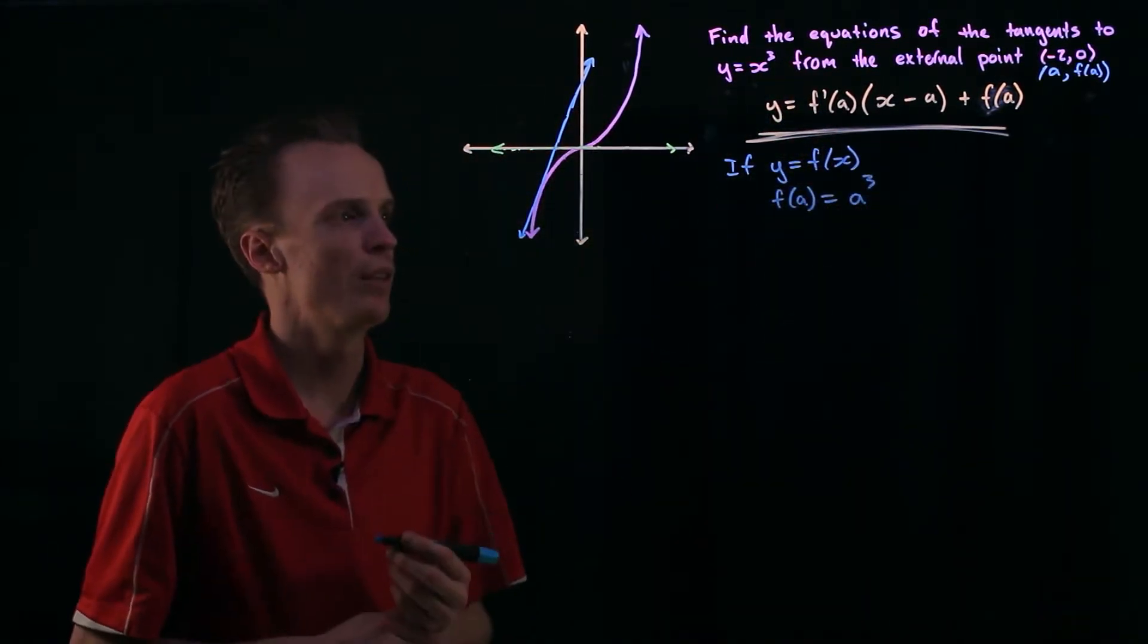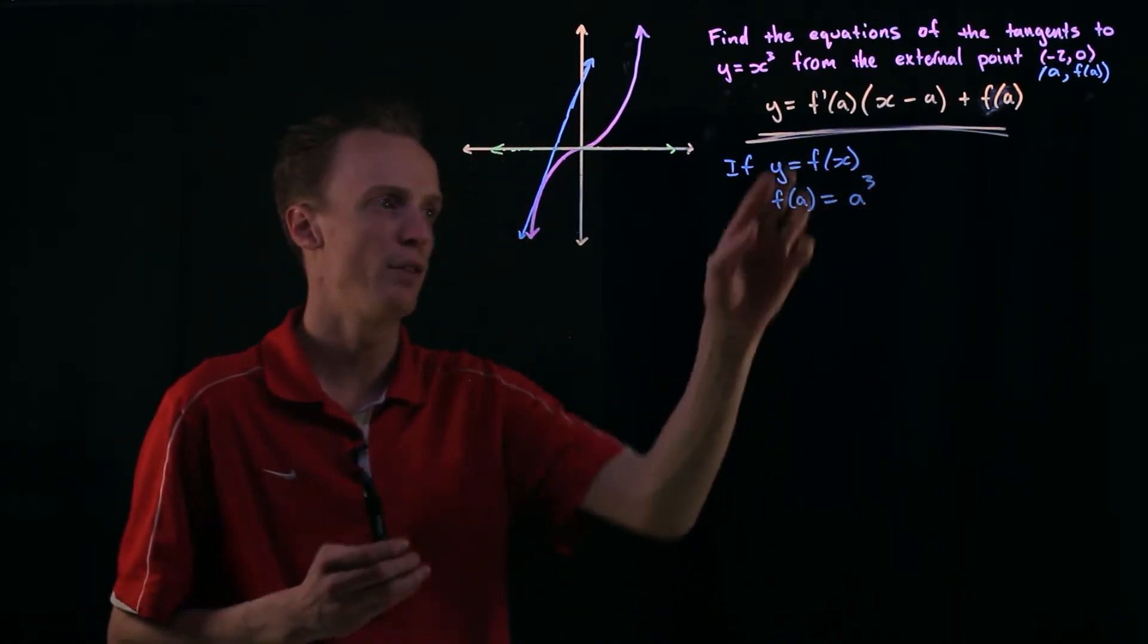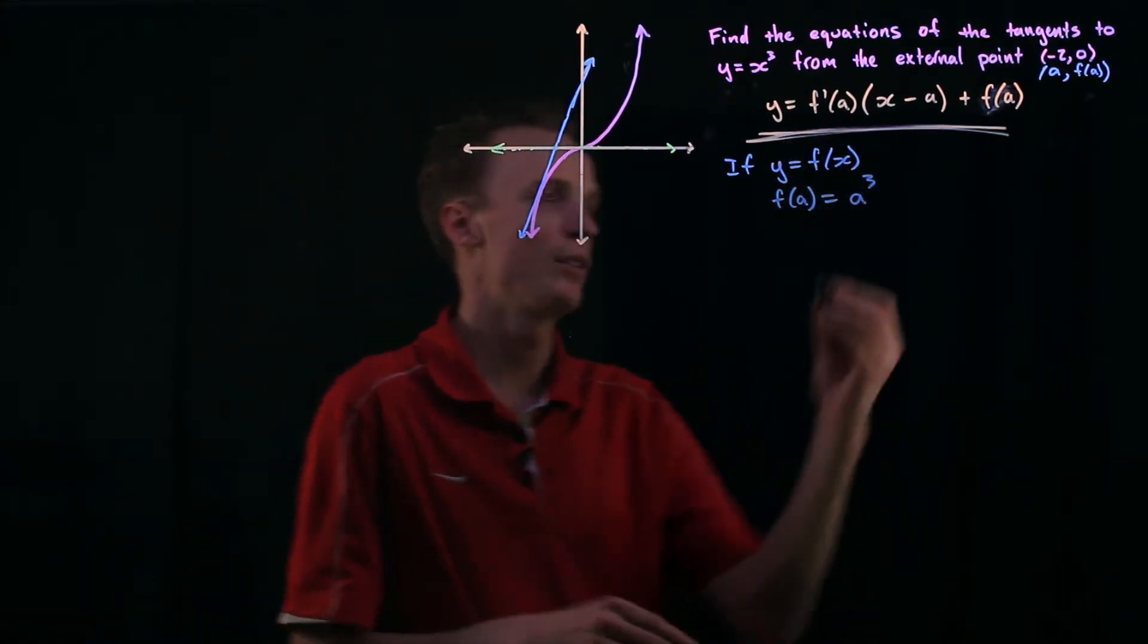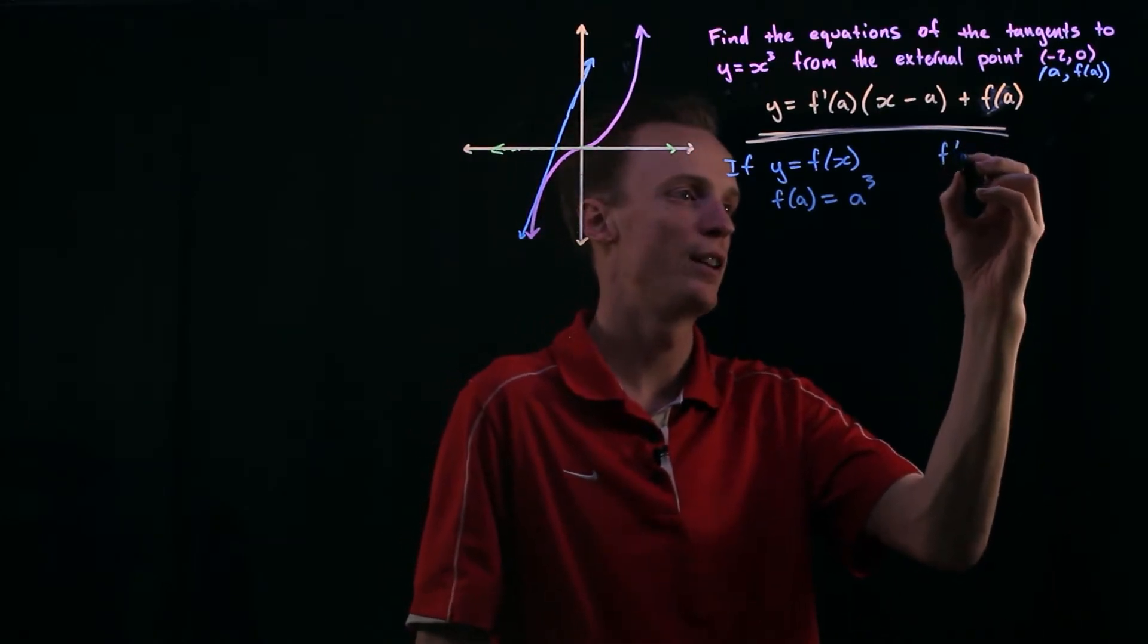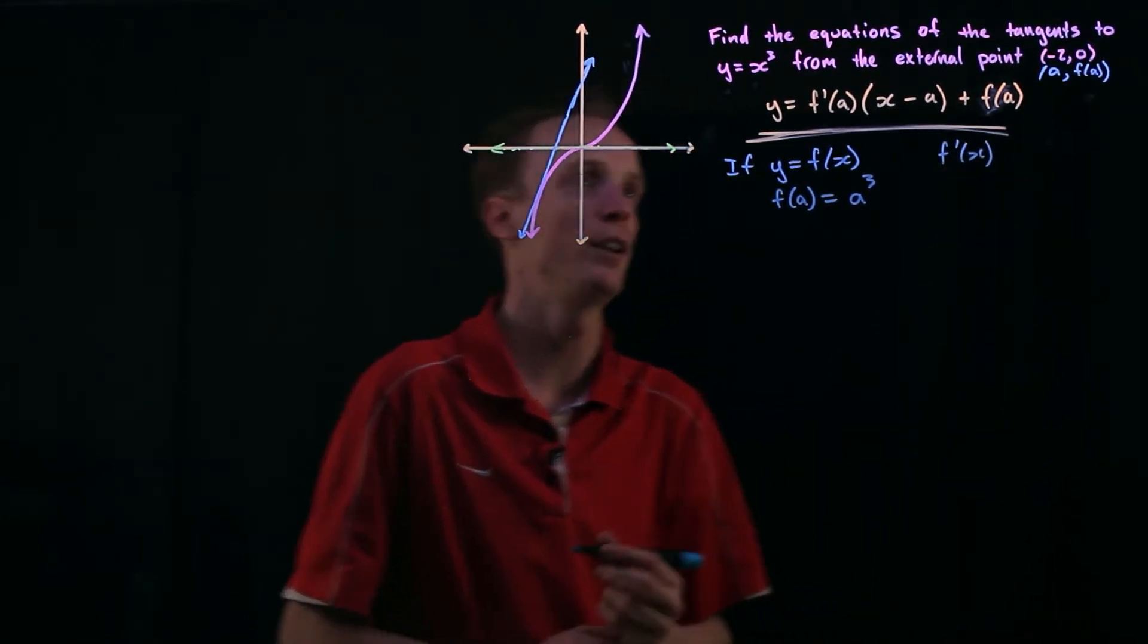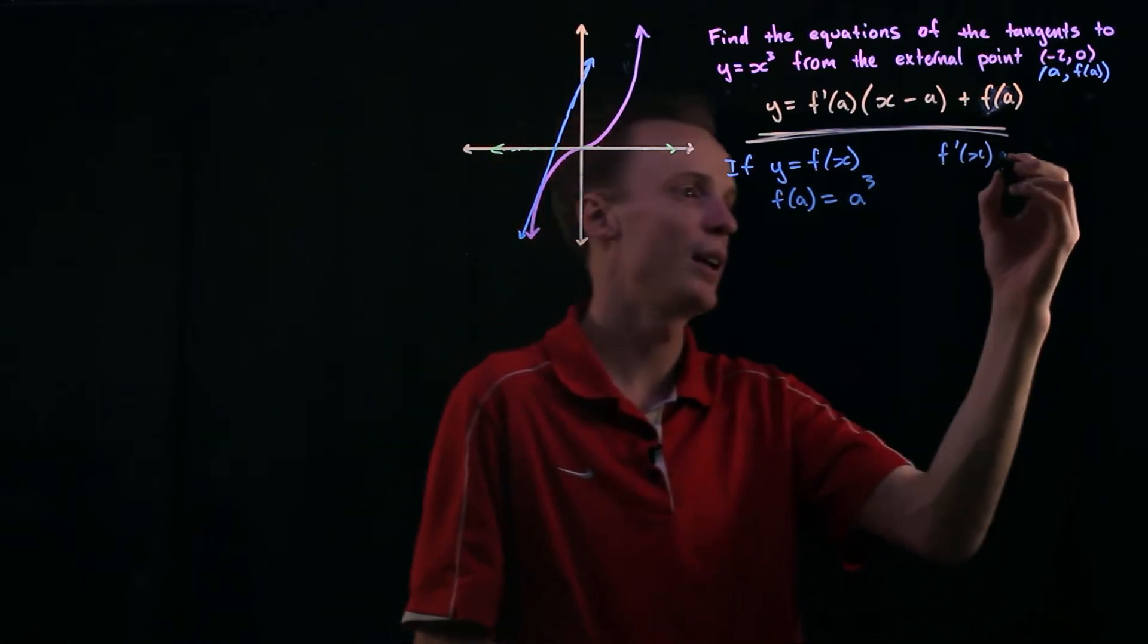What I also need though is I need to find the derivative. I need to find the slope of this. So I need to find the f dash of x or the derivative of the original function and the derivative is going to be 3x squared.